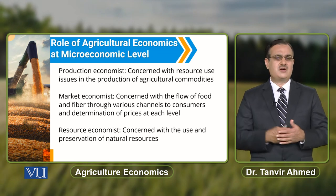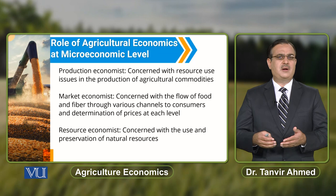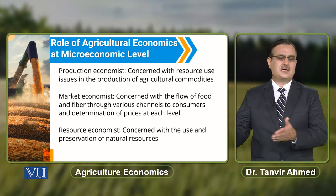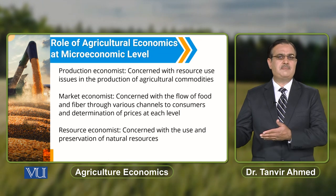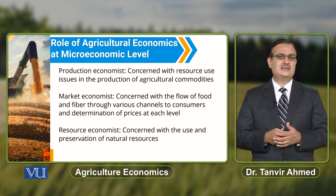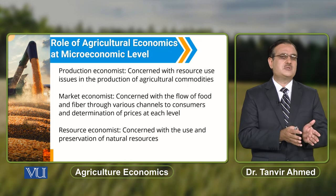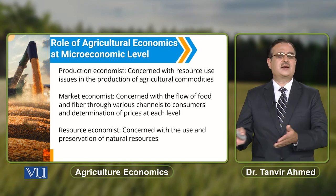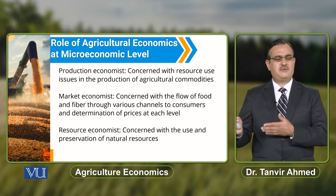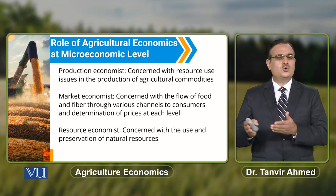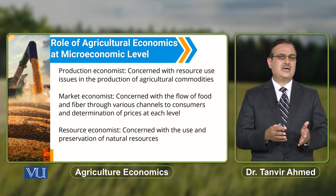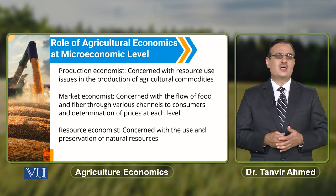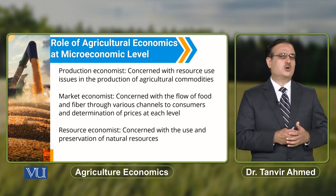The market economist will explain the market structure — whether the buyers are price makers or price takers — and will inform the farmer whether the market in which they want to sell their output is a competitive market or an imperfectly competitive market, and all these factors will help them decide in which market to sell their output.